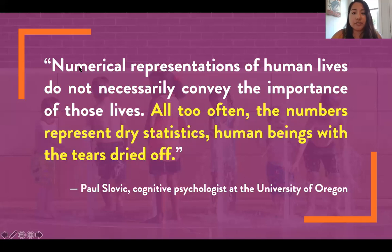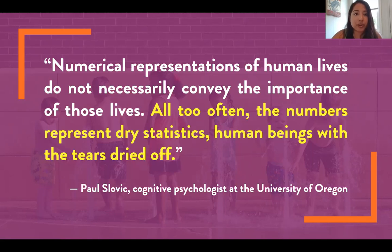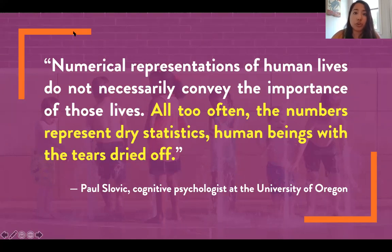Paul Flavik, who is a cognitive psychologist at the University of Oregon, says it like this: 'Numerical representations of human lives do not necessarily convey the importance of those lives. All too often the numbers represent dry statistics — human beings with the tears dried off.' Quotes and personal stories can really draw people in and are often what's remembered even if the data is not. Your strength as advocates really lies in your lived experience of having been youth at some point or having worked with children in need of a voice — and that is something data alone cannot convey.